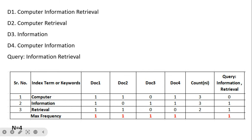We will find the term-document matrix. In document one, all three words — computer, information, retrieval — are present. In document two, two keywords are present. In document three, two keywords are present. The query is information retrieval. The computer word is present in three documents out of four, information is present in three documents out of four, and retrieval is present in two documents out of four.